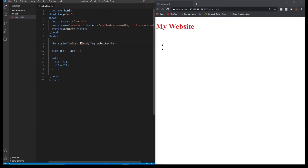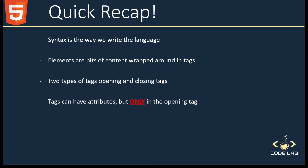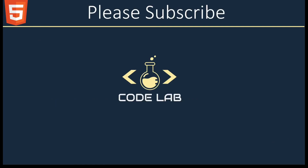I just wanted to conclude the video with a quick recap. We learnt that syntax is the way we write the language; elements are bits of content wrapped in tags; there are two types of tags — opening and closing; and tags can have attributes, but only the opening tag can have an attribute — the closing tag can't. That's it for this video. If you like what you see, please consider subscribing. In the next video we'll be looking at getting set up and starting our code editor so we can start writing some HTML.